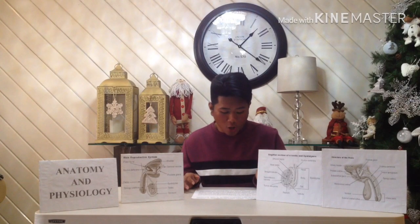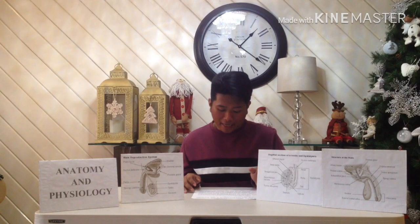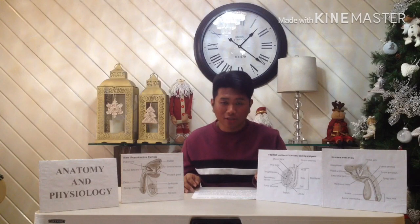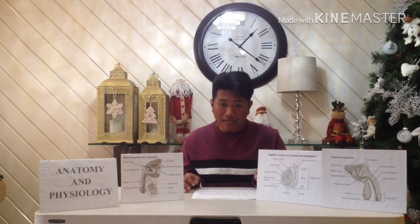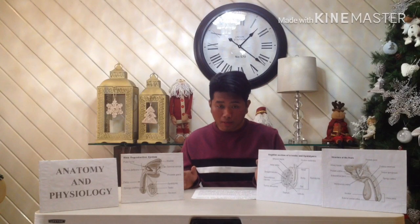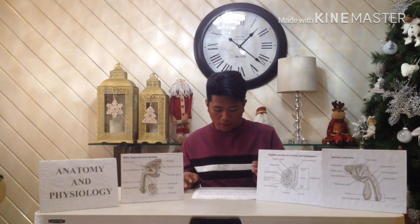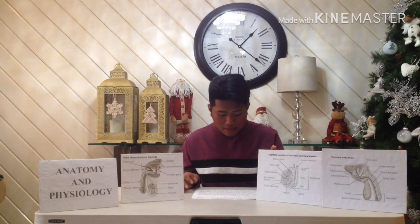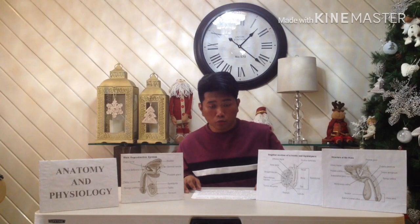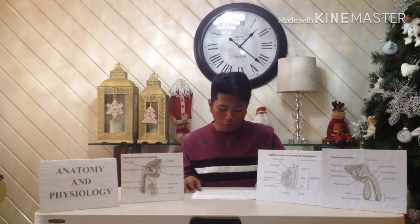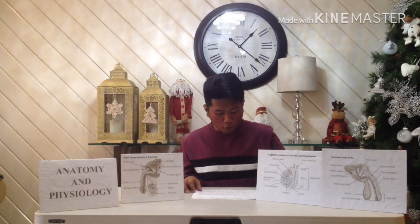Each testis is an oval structure about five centimeters long and three centimeters in diameter. A white fibrous connective tissue capsule, the tunica albuginea, surrounds each testis and extends inward to form septa that partition the organ into lobules. There are about 250 lobules in each testis. Each lobule contains one to four highly coiled seminiferous tubules that converge to form a single straight tubule.